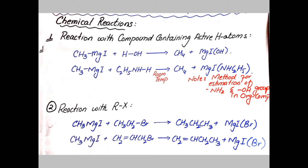There are different types of reactions of the Grignard reagent. One type is the reaction with compounds containing active hydrogen. Any compound having active hydrogen — mostly acidic compounds that can easily release a proton, such as water or amines — will react with it. For example, alkyl magnesium iodide reacts with water: the proton substitutes in a nucleophilic substitution reaction to give methane and magnesium iodide hydroxide.